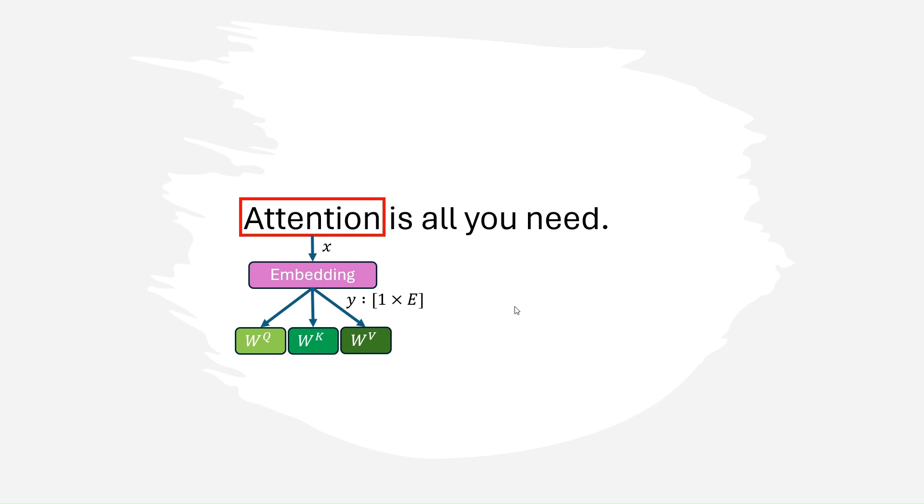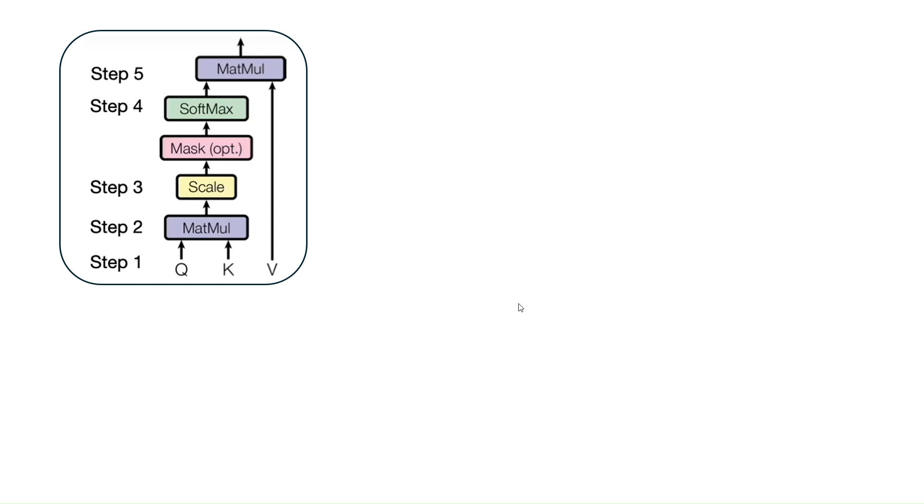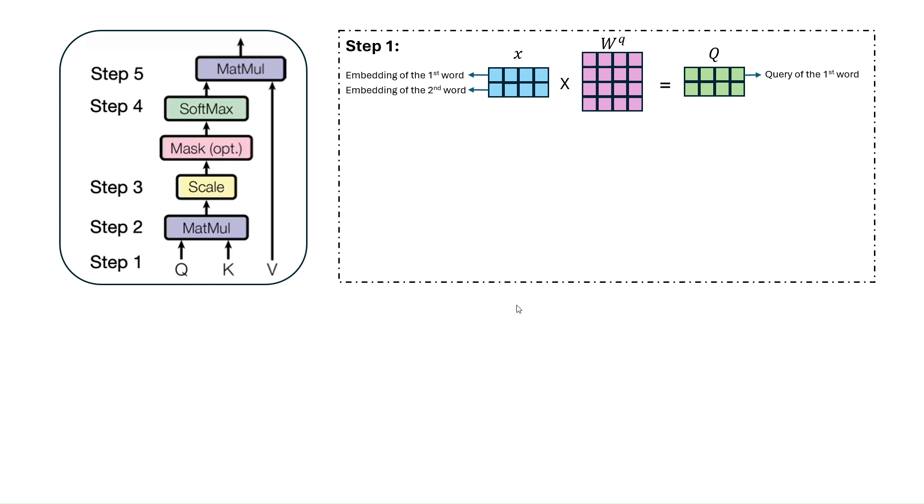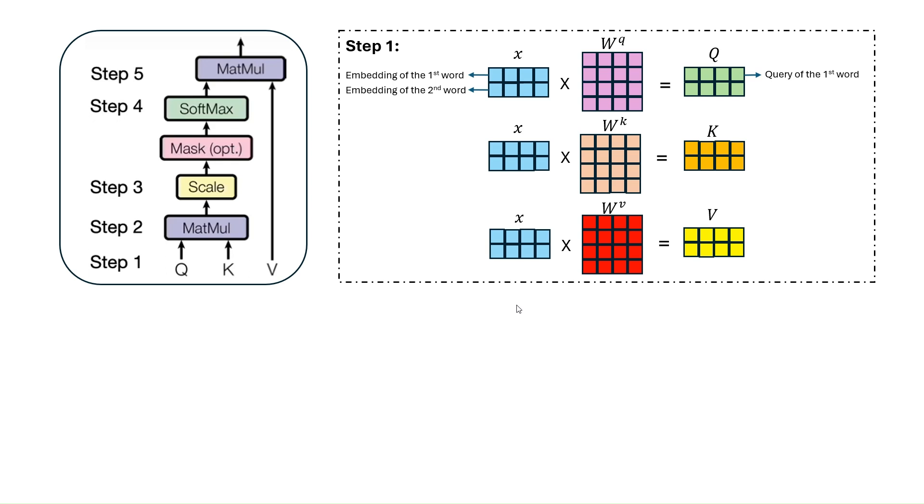The embedding vector of each token is then multiplied by three different trainable matrices to get one query, one key, and one value for each token. We can consider these three matrices as feature extractors. In order to implement the self-attention mechanism, we have five steps. In step one, we put the embedding vector of each word in one row of a matrix. For example, if we have two tokens and the length of our embedding vector is 4, then we obtain a matrix of size 2 by 4. This matrix is then multiplied by a weight matrix to get a query matrix. For example, the query vector of the first token will be in the first row of the query matrix and so on. We repeat the same process to get one key matrix as well as one value matrix for our input text.